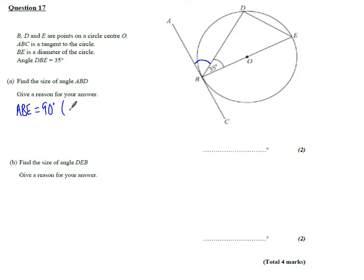And the reason for that is because a radius meets a tangent, which is this line here, at 90 degrees.